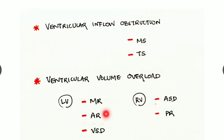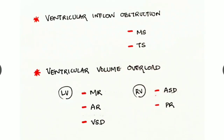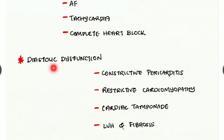Heart failure can occur due to ventricular volume overload. Mitral regurgitation, aortic regurgitation, and ventricular septal defect can cause left ventricular failure, whereas atrial septal defect and pulmonary regurgitation cause right ventricular failure. Heart failure can also occur due to arrhythmias such as atrial fibrillation, tachycardia, or complete heart block.